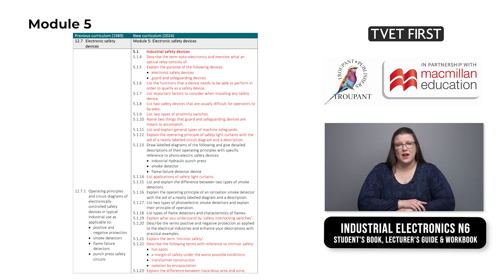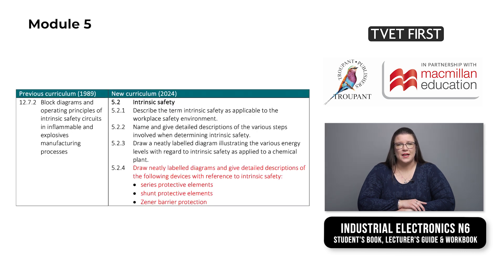Module 5 on electronic safety devices corresponds with section 12.7 of the 1990 syllabus. 17 of the 23 learning outcomes for section 5.1 on industrial safety devices are new. Concepts such as optoelectronics, safety light curtains and safety interlocking switches are introduced. Intrinsic safety is covered in more detail in section 5.2, for example distinguishing between series protective elements, shunt protective elements and Zener barrier protection.